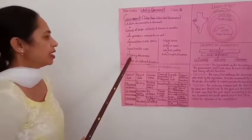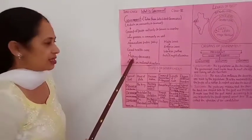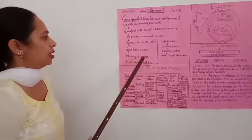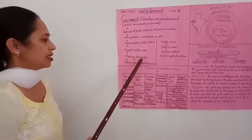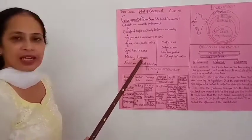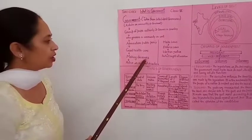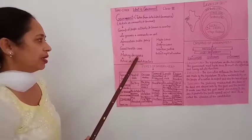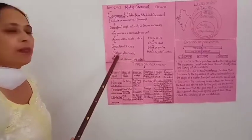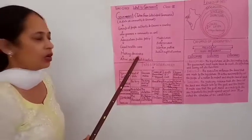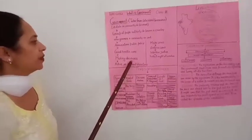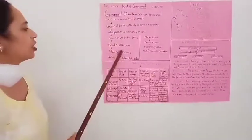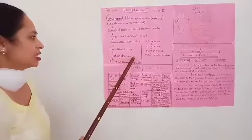Then is making decisions. To make decisions — फैसले लेने का यह काम करती है हमारी government, along with the legislature, along with the executive.